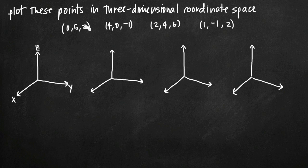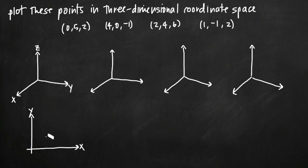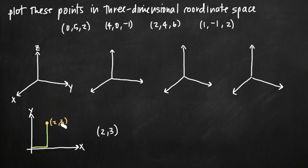Because this is the very beginning of three-dimensional coordinate space, moving from two-dimensional coordinate space, I want to note that in two-dimensional coordinate space we just had two variables, x and y, and we would have a two-dimensional coordinate system with x and y. If we had a point, let's say we called it (2,3), we would move out a distance of 2 along the x-axis and then up a distance of 3 along the y-axis, and our coordinate point would be (2,3).